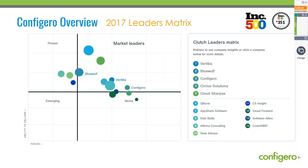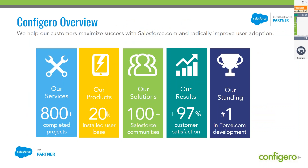As an overview, Configuro is one of the top partners in Salesforce that implements Force.com. We were ranked in the top right quadrant by a company called Clutch.co, who researches independent firms and who implements Salesforce services. We're one of the top partners out there today, doing a lot of Force.com projects as well as communities. As Andrea mentioned, we've implemented over 800-plus projects to date. We also have products on the AppExchange, so we're an ISV partner as well, and we've implemented over 100-plus community projects.